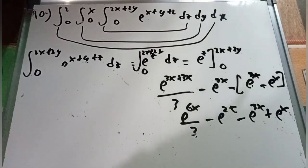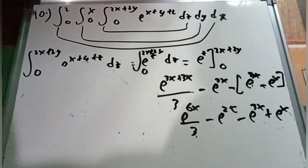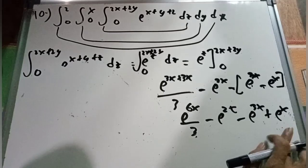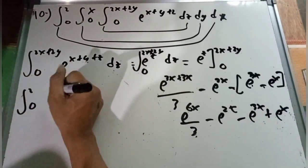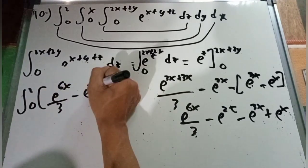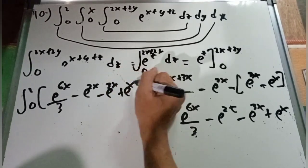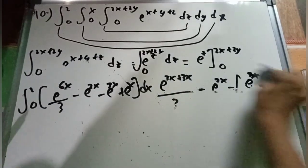We combine these terms for the third integral. The four terms are: e to the 6x all over 3, minus e to the 2x, minus e to the 3x, and plus e to the x. This becomes the integrand for the final integration with respect to dx, from 0 to 2.